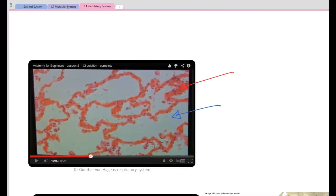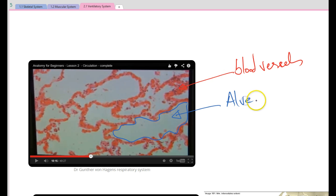This is a picture from the Gunther video. The red around the outside are blood vessels, and the clear space on the inside is our alveoli.